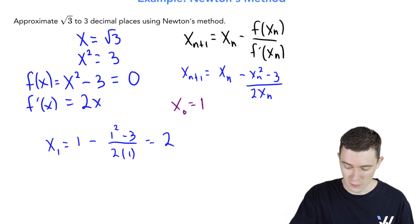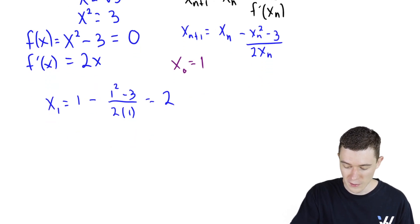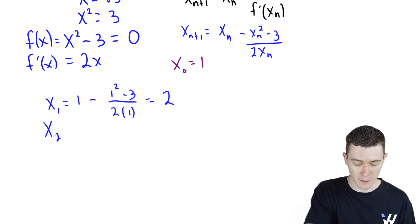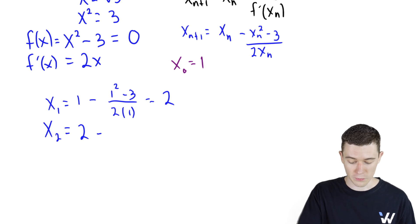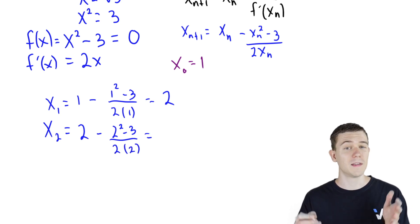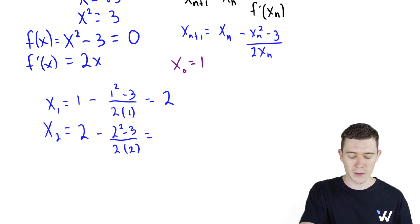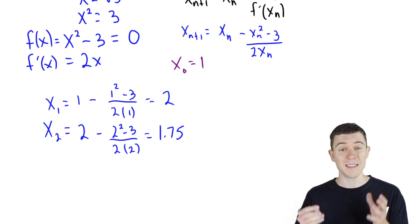So we'll just do this again. This is an iterative process, so we'll keep going. x sub two is x sub one. We just found that to be two minus our function evaluated at two over the derivative evaluated at two. And you can see very quickly that these problems will get computationally intense. I'll spare you the details here. This is one point seven five. That's x sub two.